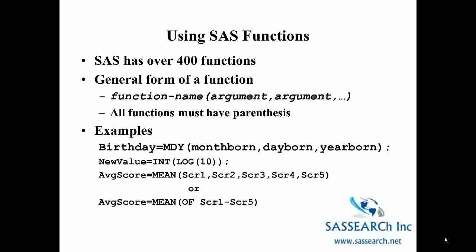In the next example we're calculating average score as the mean of five other scores, and you can write it two ways. You can list the five individual variables separated by commas, or you could write average score equals MEAN and then inside your parentheses score 1 dash score 5. That works well if you have variables which end in a number and you can express the smallest value score 1 then hyphen score 5.